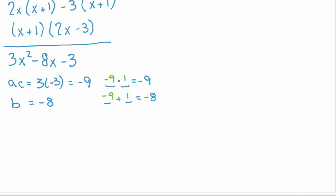So remember that's how we're going to rewrite that middle term. So 3x squared minus 9x plus 1x minus 3. Now we can factor it with grouping. 3x is the GCF of those first two terms and we have x minus 3.